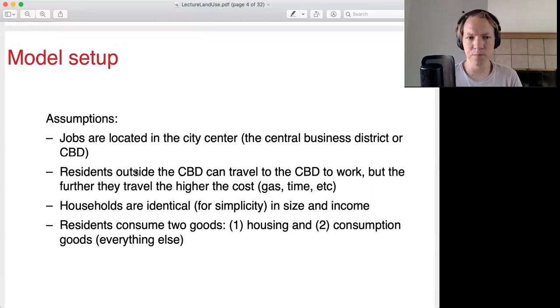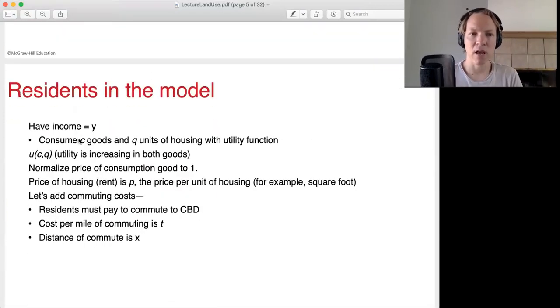So we are going to assume in the monocentric city model that the jobs are primarily located in the city center, what we are calling the CBD. These days, CBD stands for something else, but in the context of this lecture, it's the central business district. And so the idea here is that's where the jobs are. Residents work in the central business district. So if they live outside of it, they have to commute. We are going to assume that all the households are identical in the model. And we are going to assume that there's only two goods, housing and consumption. So if I'm a household, I'm going to buy some housing and I'm going to buy some consumption goods.